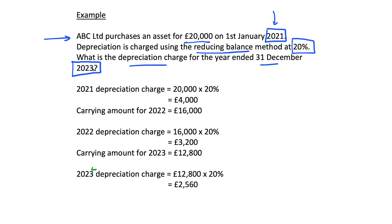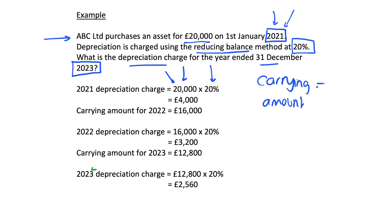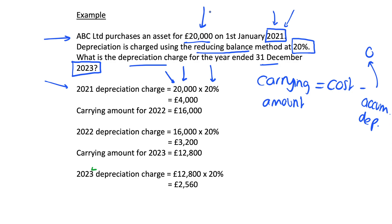Starting with 2021: our carrying amount equals the cost minus accumulated depreciation. In the first year there is no accumulated depreciation, so the carrying amount is simply the cost of £20,000. The depreciation charge for 2021 is therefore £20,000 × 20% = £4,000.